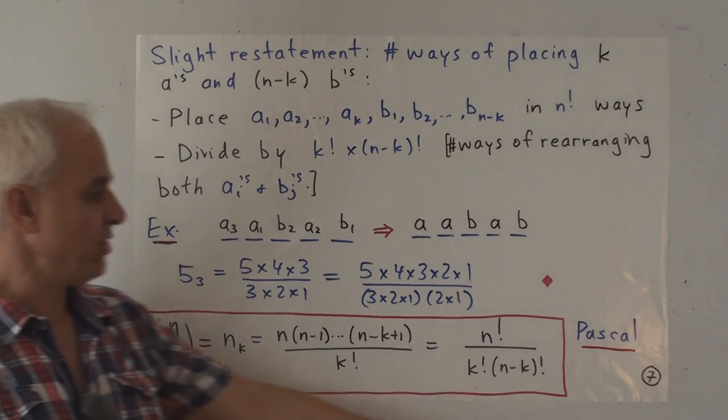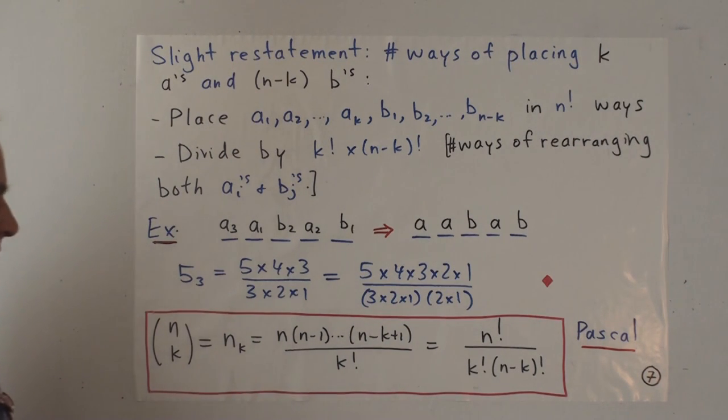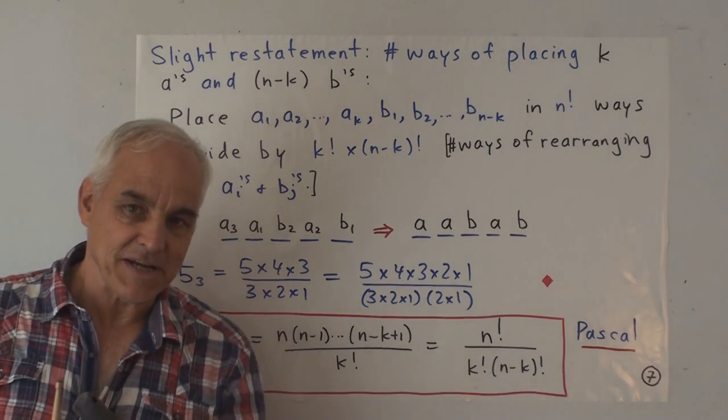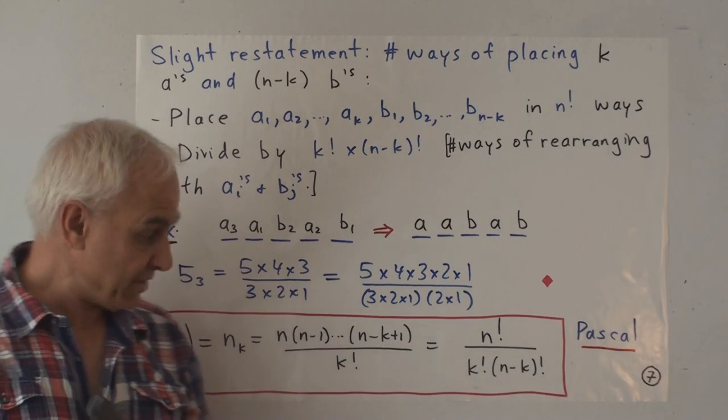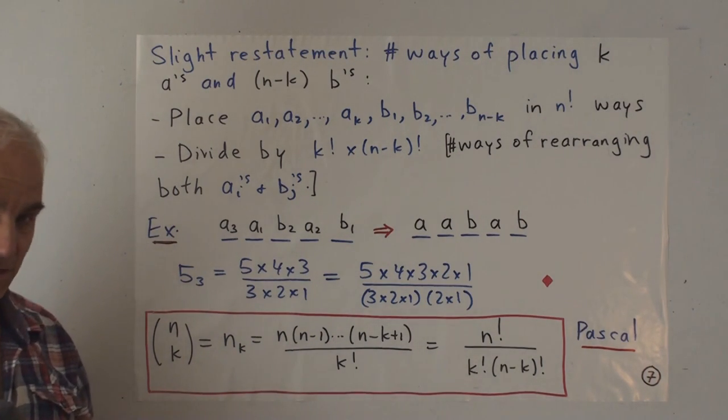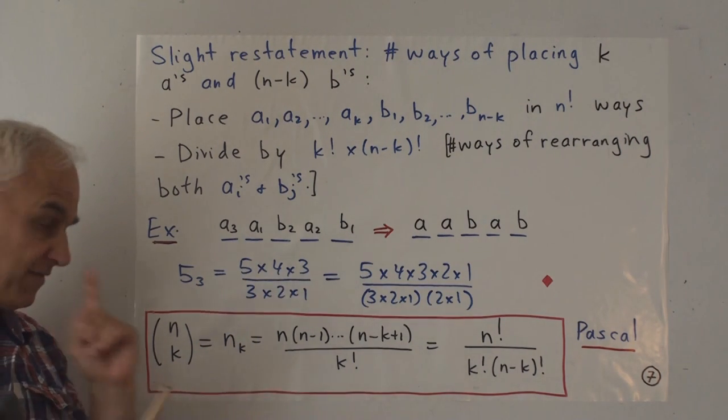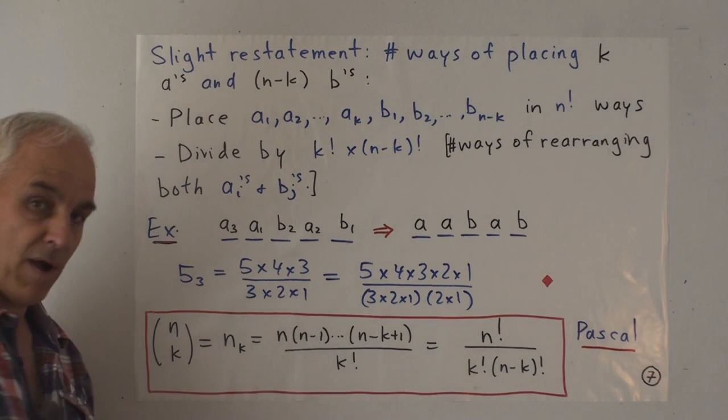And Pascal was really the first one to write these things out rather explicitly. It's probably worth making a small comment here that there's a little bit of an interesting number theoretical aspect to this in that it implies this argument that the product 5 times 4 times 3 is always divisible by 3 times 2 times 1.